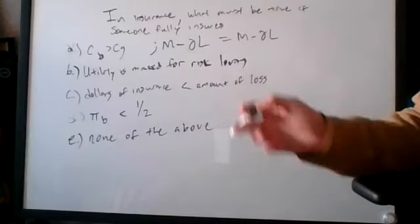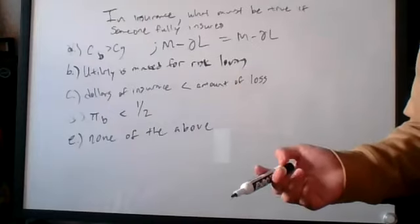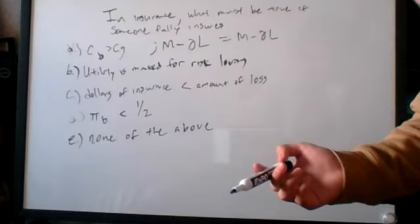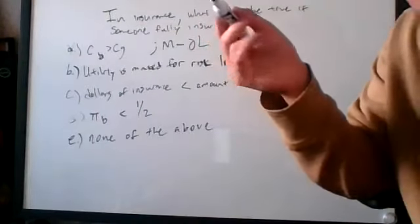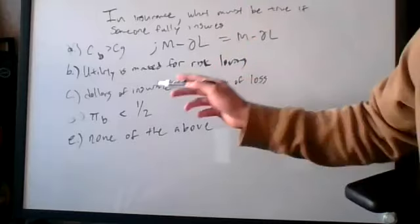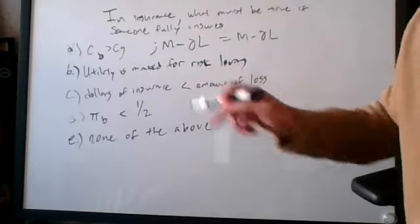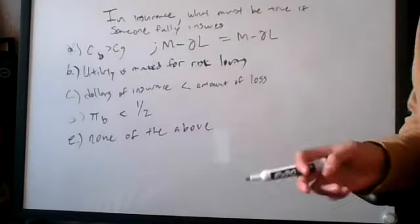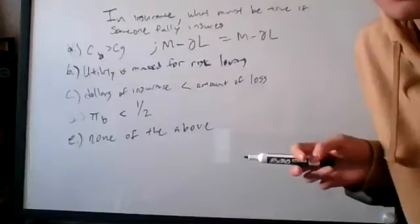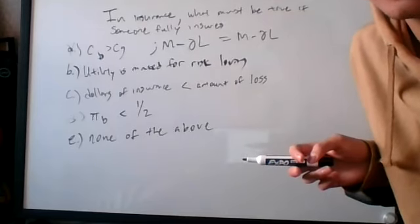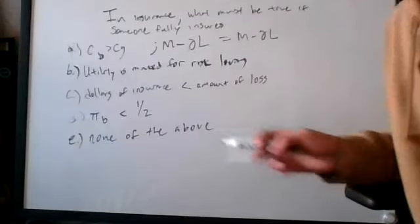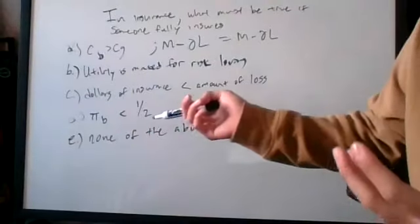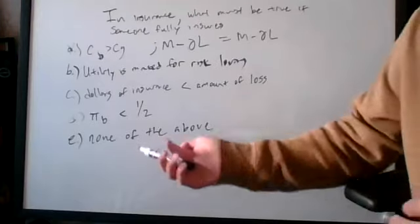Answer choice C says dollars of insurance is less than the amount of loss. Dollars of insurance is basically K — the amount of coverage — and the amount of loss is L. When someone is fully insured, K equals L, so this inequality cannot be true. And probability has nothing to do with whether someone fully insures — that has more to do with fair insurance. Fair insurance is only when the probability equals one another. So it could be true in some cases, but it's not always true — that's why the answer is E, none of the above.